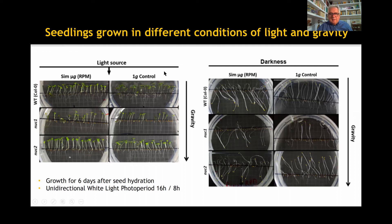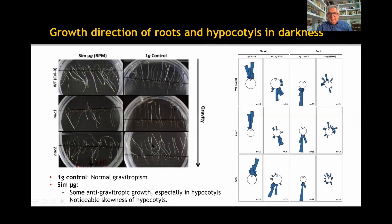Seedlings showed their roots oriented in the direction of the gravity vector and opposite to the light source — positive gravitropism and negative phototropism. Hypocotyls were oriented opposite to gravity and, in the case of illumination, towards the top light source — that is, negative gravitropism and positive phototropism. Simulated microgravity samples with photoperiod regime presented the same orientation as in 1G control samples, except for a slight disorganization of the roots. Samples grown in darkness and microgravity, without any tropistic cues, showed an apparent random growth of roots and hypocotyls.